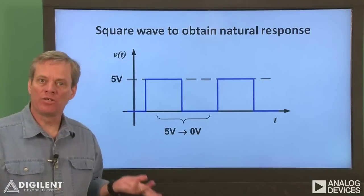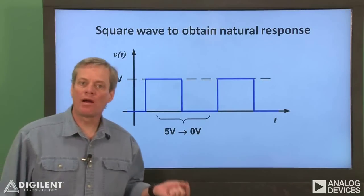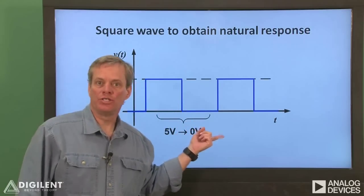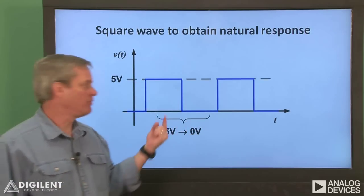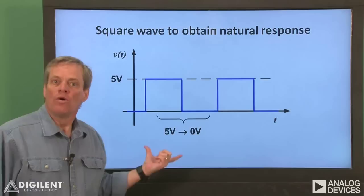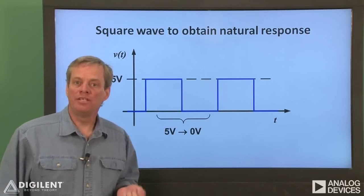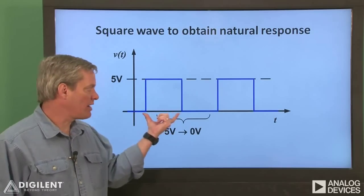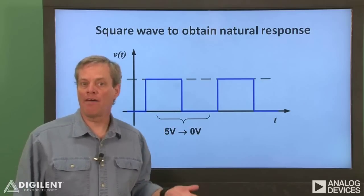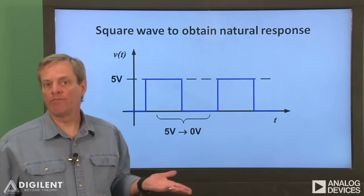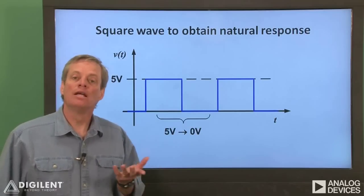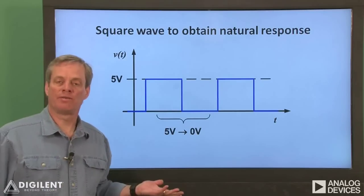To obtain our natural response using a waveform generator, we'll use a square wave to apply the voltage. A square wave alternates between high and low voltages. If we start acquiring our data when the applied voltage is high and then have the voltage go low, we can obtain our desired natural response. We just need to make sure that the period of the square wave is long enough so that the circuit can reach steady state both before and after the transition. A period that's more than about 5 or 10 times longer than the circuit's time constant should be plenty of time to reach steady state. Now let's wire up our circuit and see how it behaves.